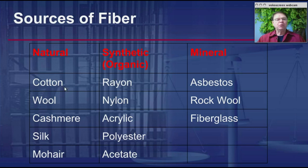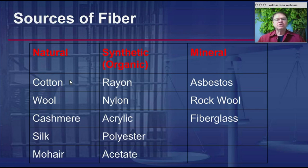Natural fibers are going to be either carbohydrate-based or similar to what we find in human hair — they're going to be made out of protein. So chemically, they're going to be distinguished from these other two categories.